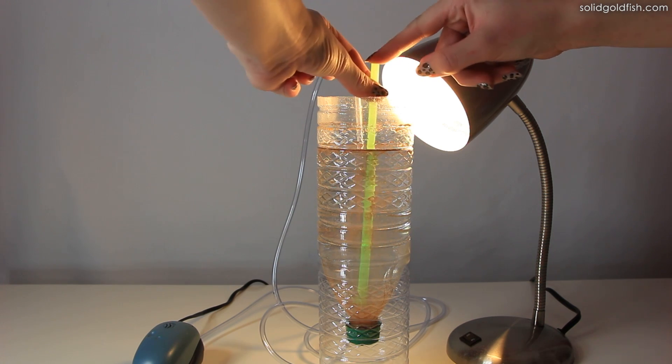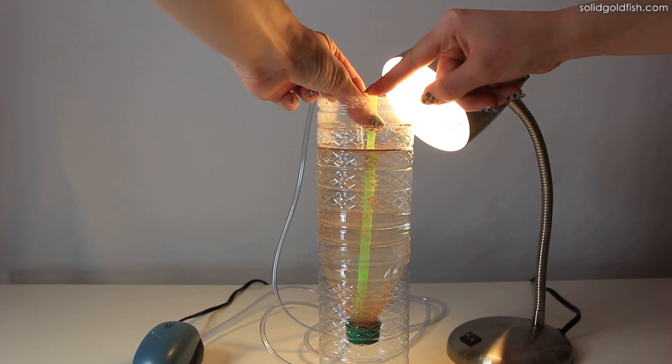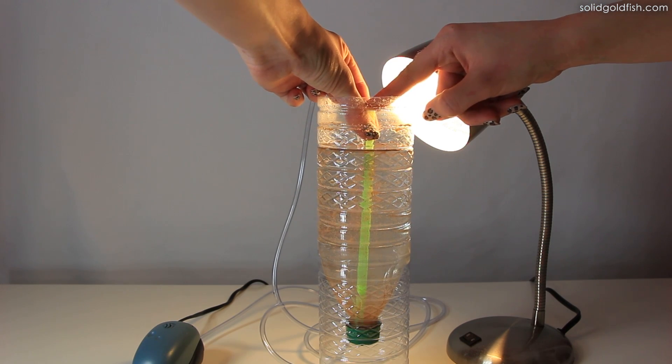You can now remove the brine shrimp and avoid most of the eggshells by using a turkey baster to suck them up directly from the bottom of the bottle.